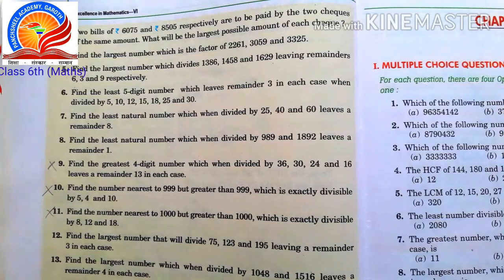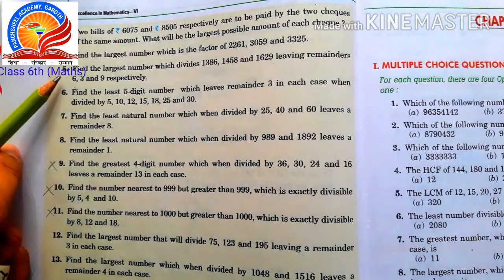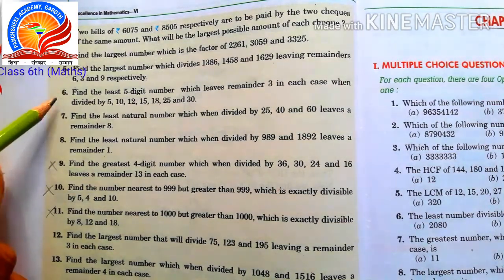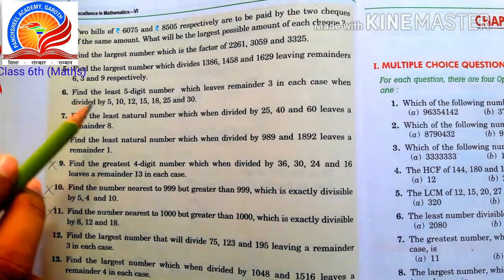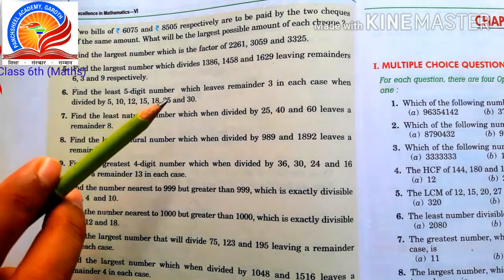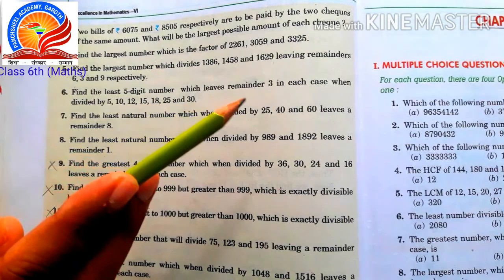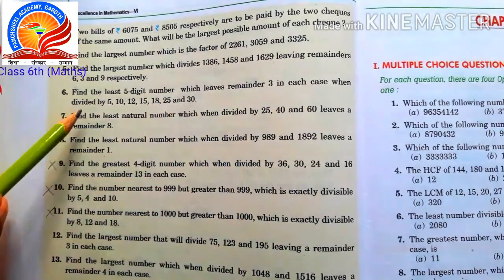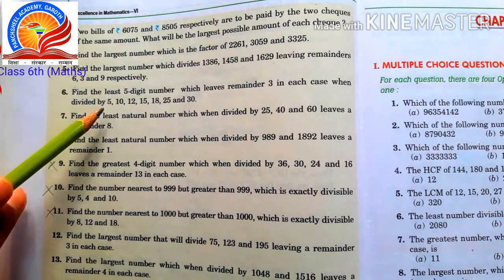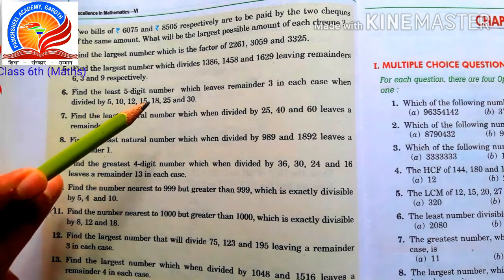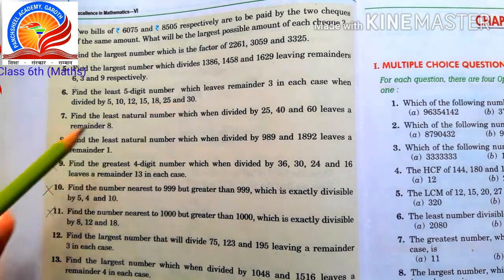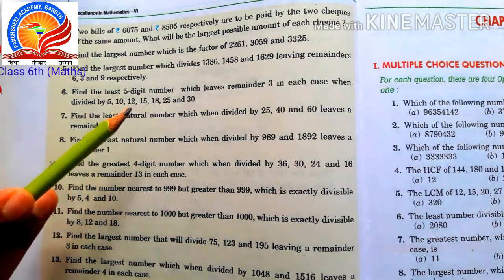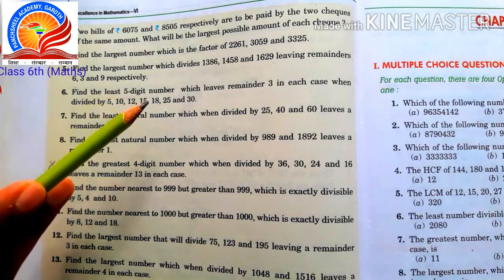My dear students, last time we discussed exercise 3.8, question number 5. In this video we will start question number 6. Question number 6: Find the least 5-digit number which leaves remainder 3 in each case when divided by 5, 10, 12, 15, 18, 25, and 30. We need to find the smallest 5-digit number satisfying this condition.